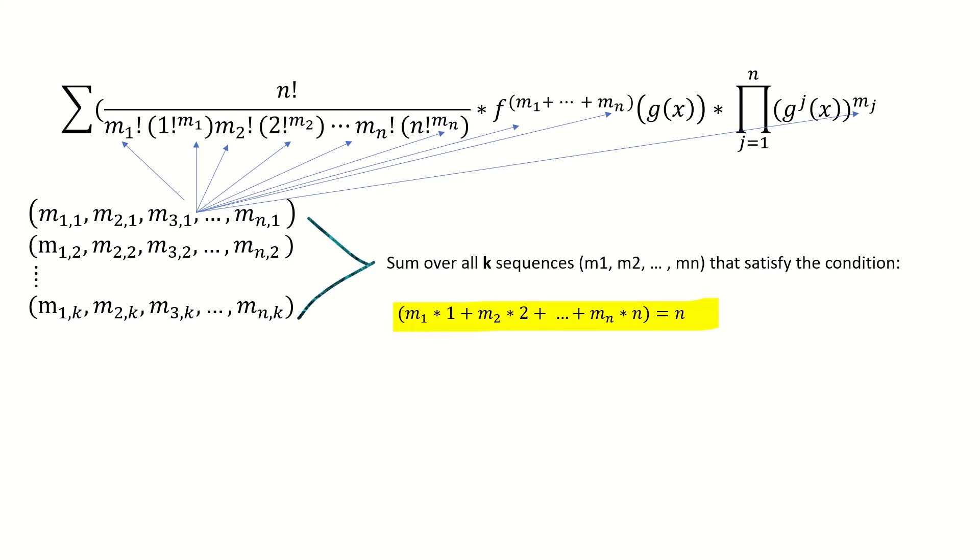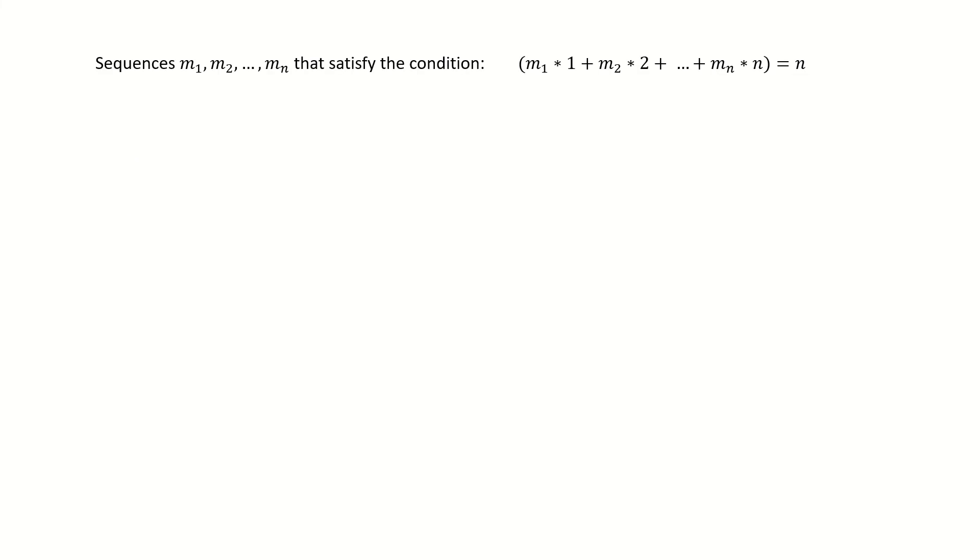So what does the condition highlighted in yellow mean? To show you what this condition means, let's say n equals 3. Since n equals 3, each sequence will range from m1 to m3, and they'll have to satisfy the condition that m1 times 1 plus m2 times 2 plus m3 times 3 equals 3. Our job now is to find all possible sequences of positive integers m1, m2, m3 that satisfy this condition.